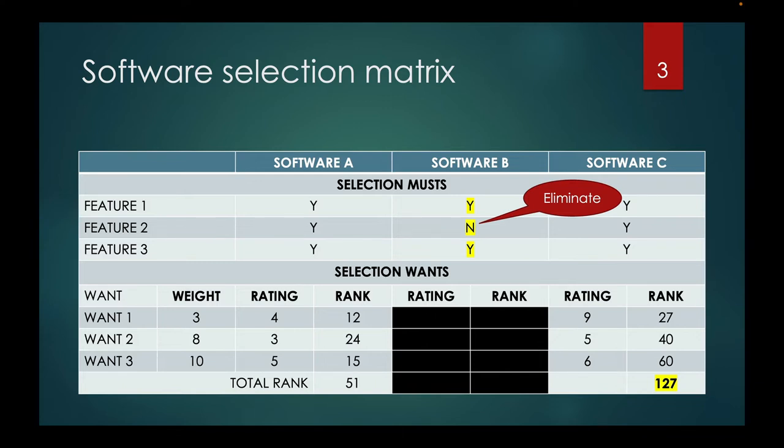The wants section of the matrix describes what you would like the software to do. These wants should be rated on a combination of the level of desire for the want and how well the software meets those wants. You can weigh the desires on a scale of 1 to 10, with 10 being the highest weight. You then grade each software package for how well it meets the desire. Multiply the weight times the rating to get a weighted score for each one. Sum up the weighted rankings. The package with the highest score should be the one chosen.